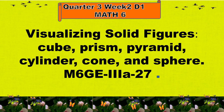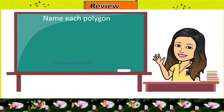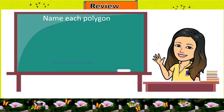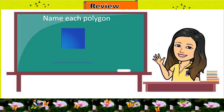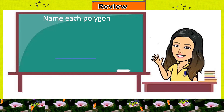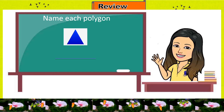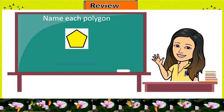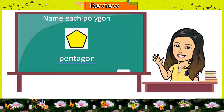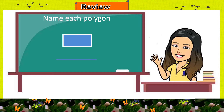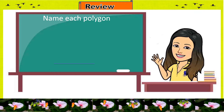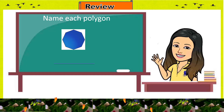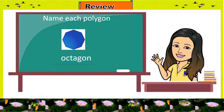But before we start our new lesson, let's have a short review first. Give me the name of each polygon. Number 1 — correct, this is a square. Number 2 — great, it is a triangle. Next — good, this is a pentagon. Number 4 — nice answer, it is a rectangle. Last — excellent, this is an octagon. It seems you're already familiar with different polygons. So now, let's move on to today's lesson.